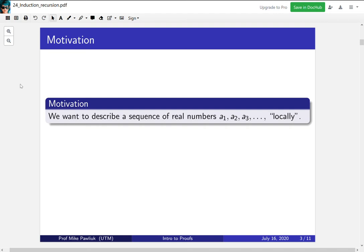This is different from describing a function explicitly like x squared or x cubed or sine x, where you just plug in the value and get it. When we're defining things locally, we want them to depend on the things that are close to them. So that's what locally means.